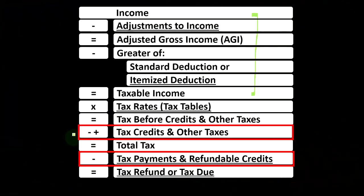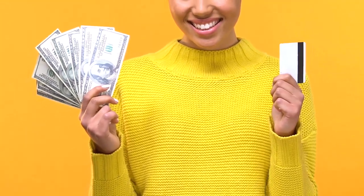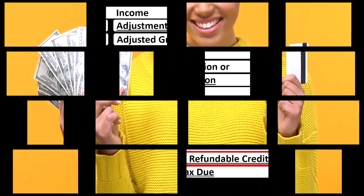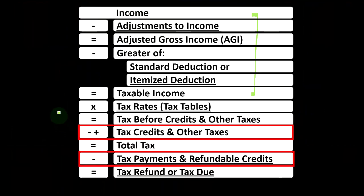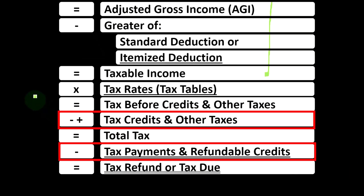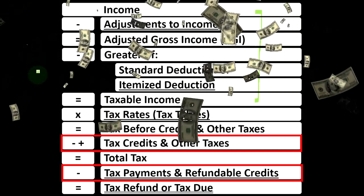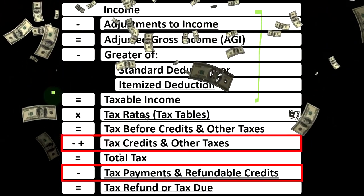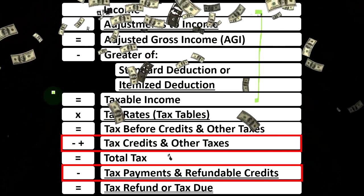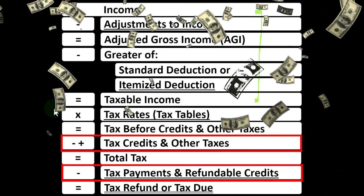Also, remember that credits are similar to deductions in that we'd like them both, but if we can get a dollar credit or dollar deduction, we would rather have the credit usually, because we'll get the full benefit of the dollar credit as opposed to the dollar deduction, which only reduces taxable income, and our benefit will be dependent upon the tax rate.